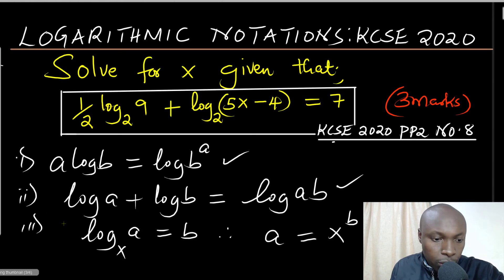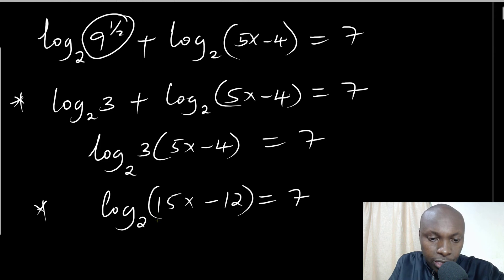Law number three: log_x(a) = b in logarithmic notation. We want to write that in index notation, which gives a = x^b.